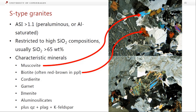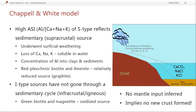S-type granites have an alumina saturation index of more than 1.1 — they're peraluminous or aluminium-saturated, so we need high-aluminium minerals crystallizing in addition to our feldspars. These generally only form at pretty high silica compositions, above 65 weight percent silica. The characteristic minerals are muscovite — with its fairly bright second-order interference colours — biotite (in S-type granites, the biotite will usually be red-brown), cordierite, garnet, ilmenite, aluminosilicates, and of course quartz, plagioclase, and K-feldspar. Not all S-types will necessarily have all of these, but they will have some of these high-aluminium minerals.